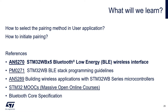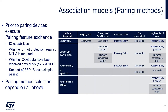I would recommend you open in parallel the application note AN5270 that describes the interface for the Bluetooth stack. Before the pairing takes place, the two devices that form the BLE link exchange some information: the I/O capabilities of each device, whether or not the device requires man-in-the-middle protection, whether the device has out-of-band data received previously (for example via NFC), and whether or not they support secure simple pairing or legacy only. The pairing method is based on all of this information.